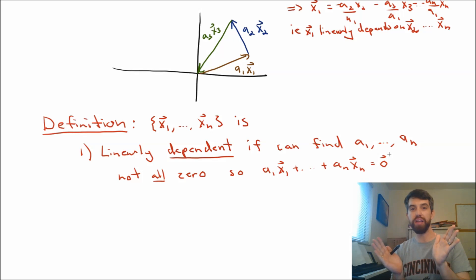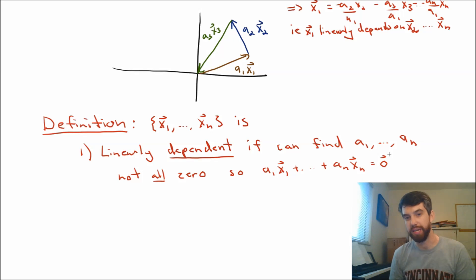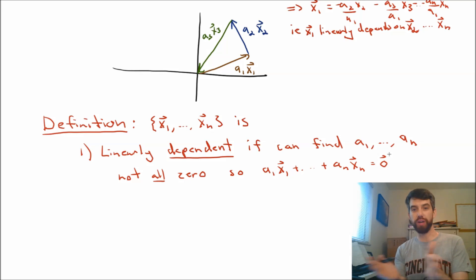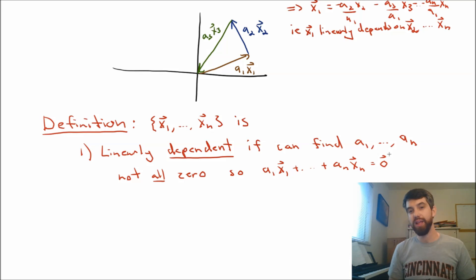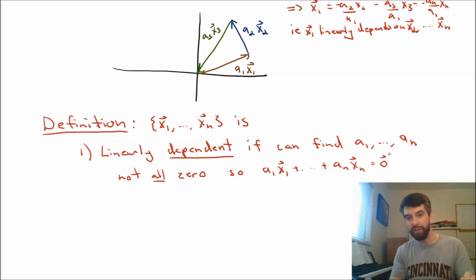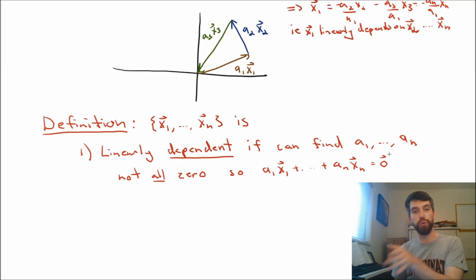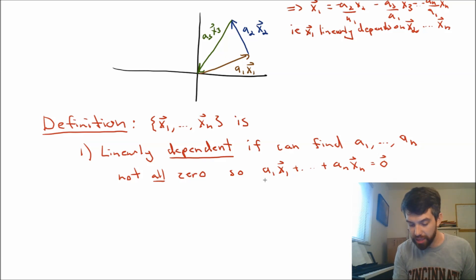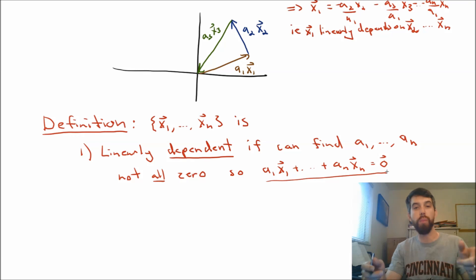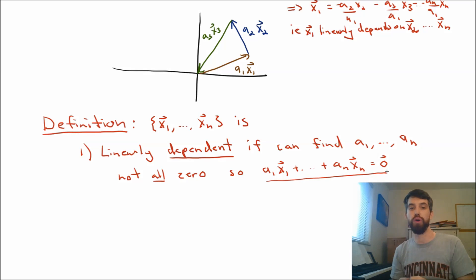Here is the formal definition of linear dependence. We're talking about a set of vectors x1 down to xn. We say that set is linearly dependent if you can find coefficients — coefficients that are not all zero — such that the linear combination of them adds up to the zero vector.